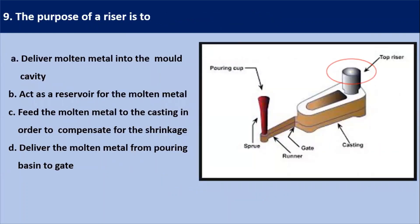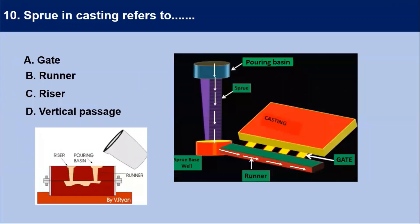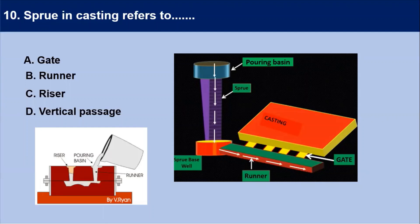Next question: the purpose of the riser is — the riser is used to compensate for losses due to shrinkage as the casting cools. The riser cools and solidifies slowest, usually being the thickest and largest part of the casting. The purpose of the riser is to feed molten metal to the casting in order to compensate for shrinkage.